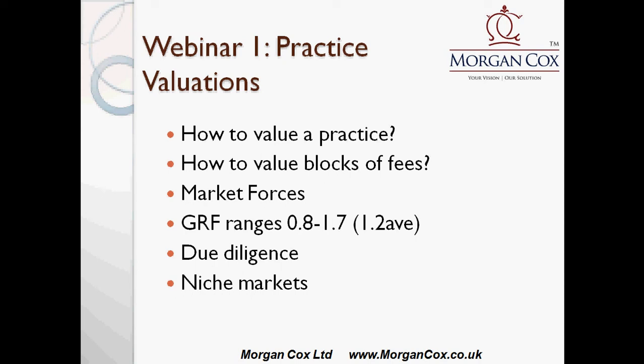With regards to the first approach, your gross recurring fee base can be multiplied by an average multiple of 1.2 to give you the broad range of transactional figures occurring in 2012 and 2013. There is obviously a range that can be applied, and this depends on the health of the practice, the reason for sale, and the exit time.